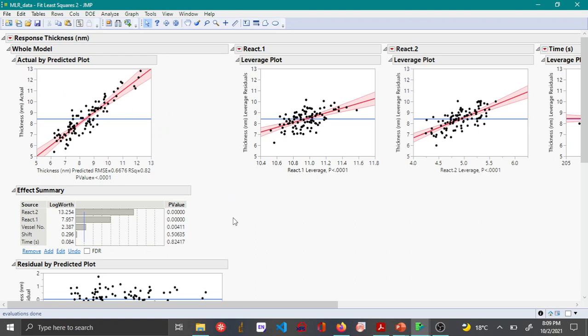So this is how you can check for multi-collinearity when you're using multiple predictors for fitting a response using multiple linear regression.